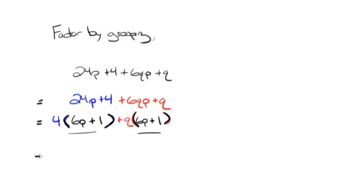This is the hardest part of factor by grouping for folks. But what I'm going to do is factor out that 6p plus 1 from both of those terms. So I'm going to factor it out of this term right here and I'm going to factor it out of this term right here. When I do that,